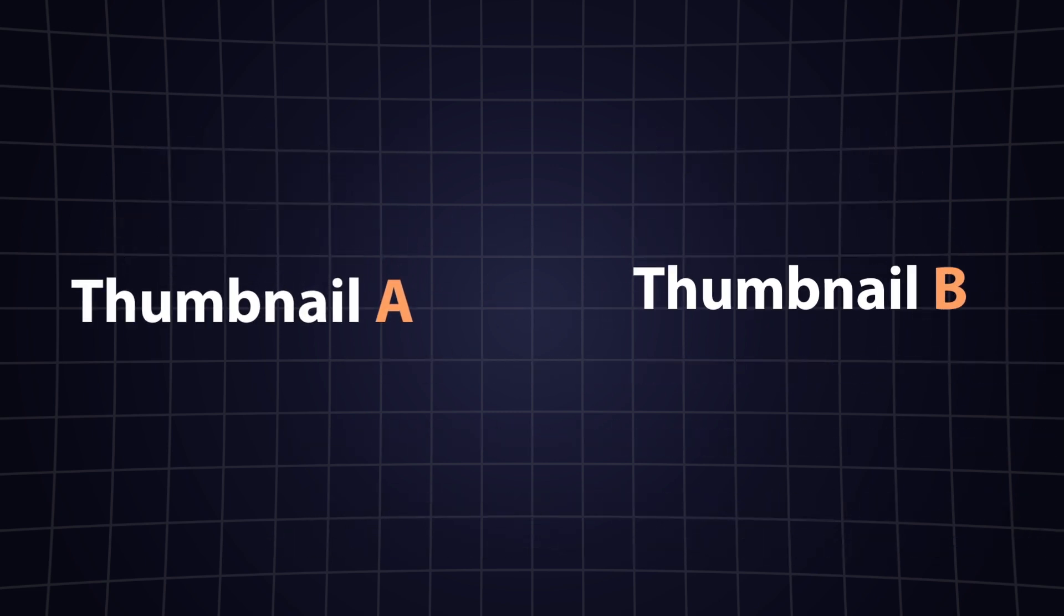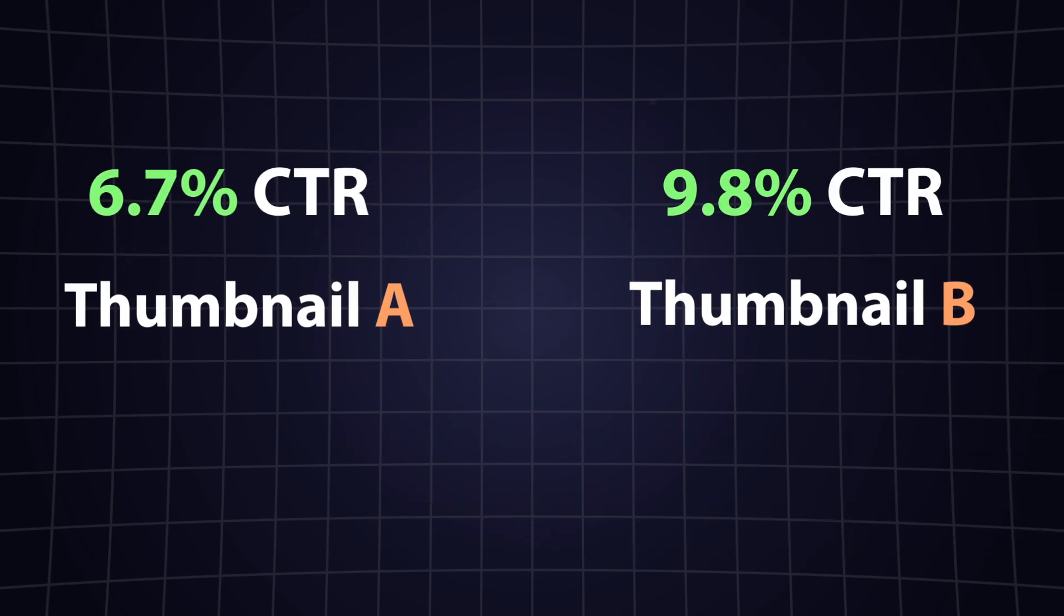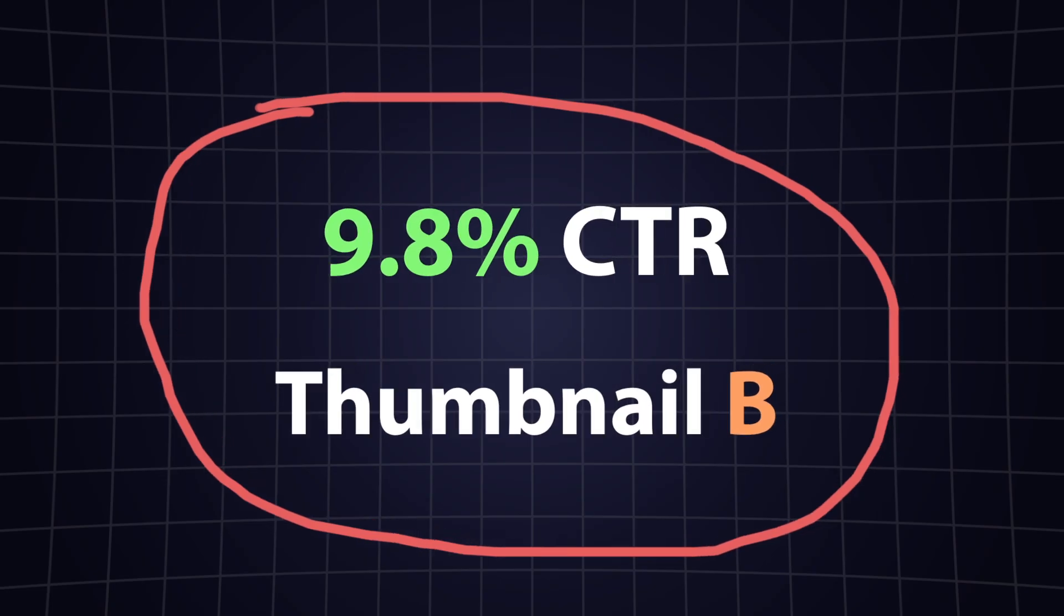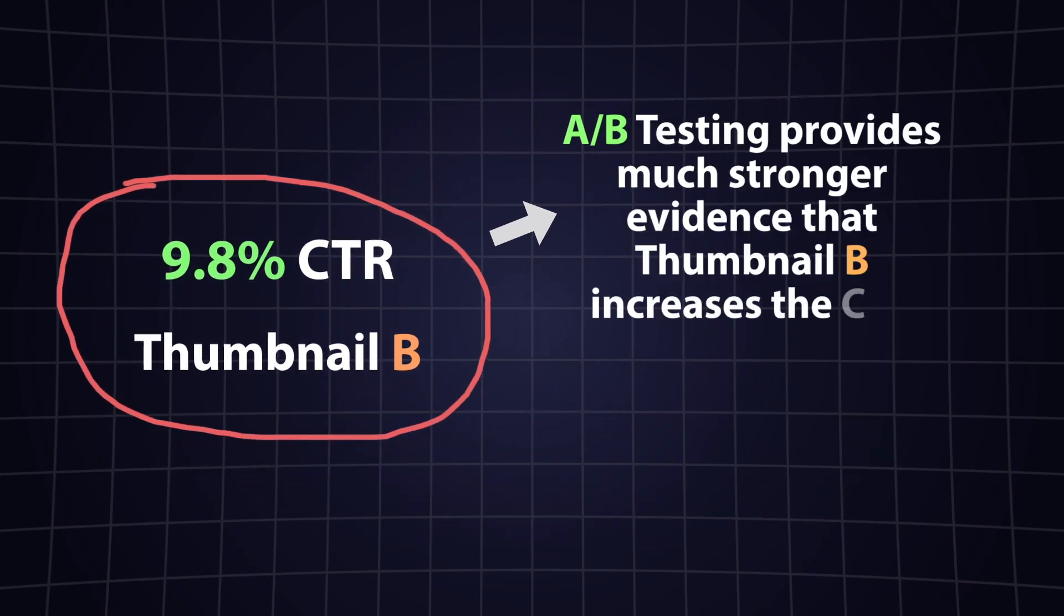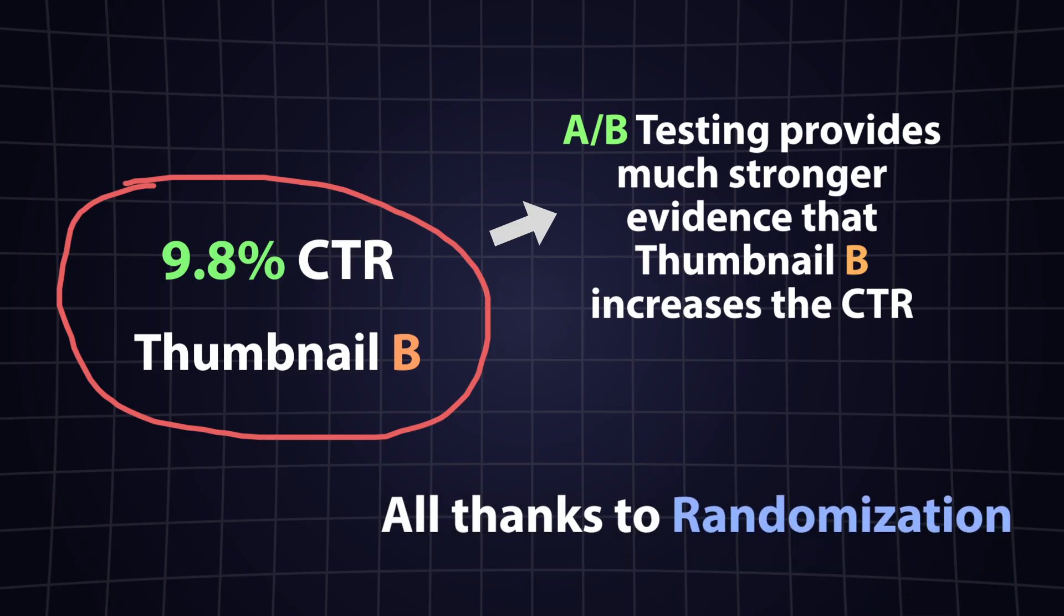Now if I see that thumbnail B consistently gets a higher click-through rate across both groups, I have much stronger evidence that the design of the thumbnail itself is what's causing the difference, not some hidden variable.